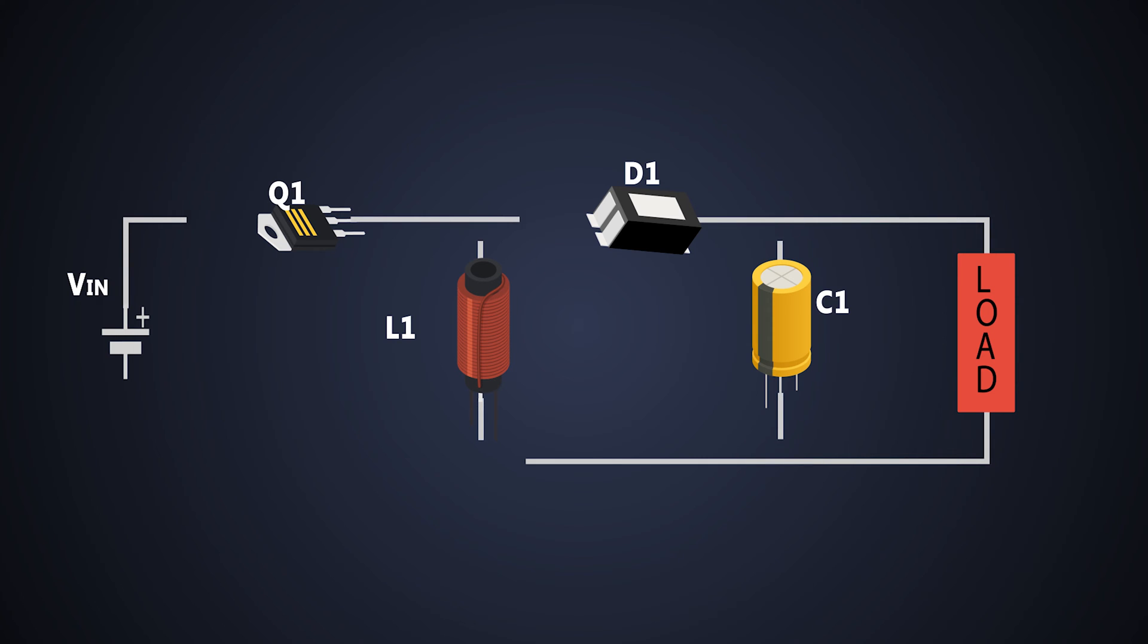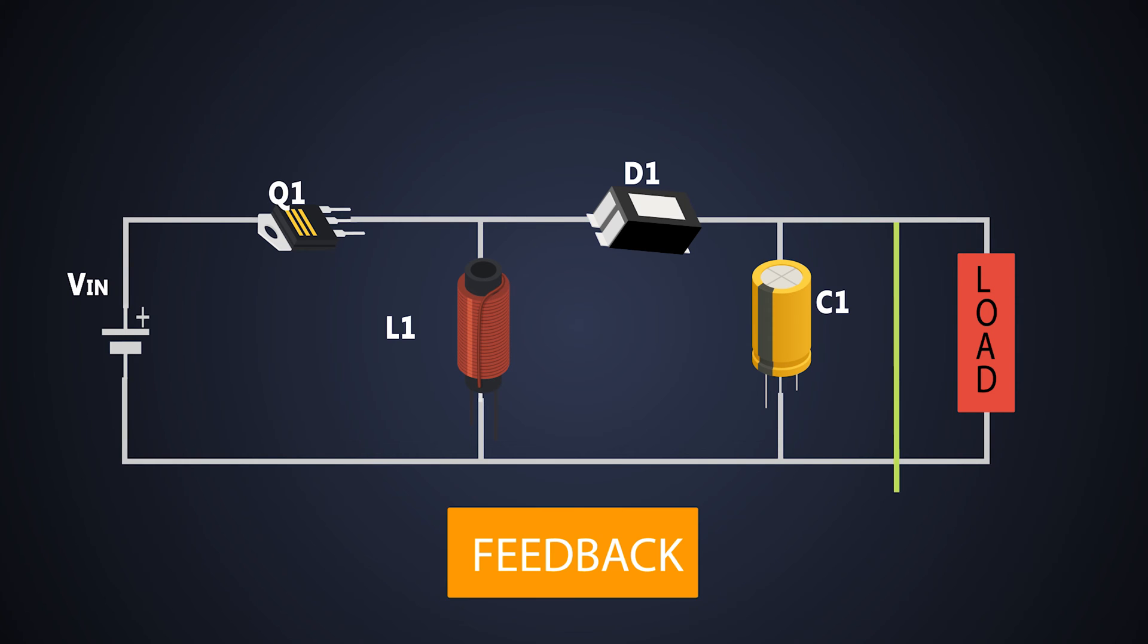The buck-boost converter is made of a MOSFET, a diode, an inductor, and an output capacitor. The PWM pulses are given to the gate of the MOSFET which switches the MOSFET on and off, and that's how the output voltage is adjusted.